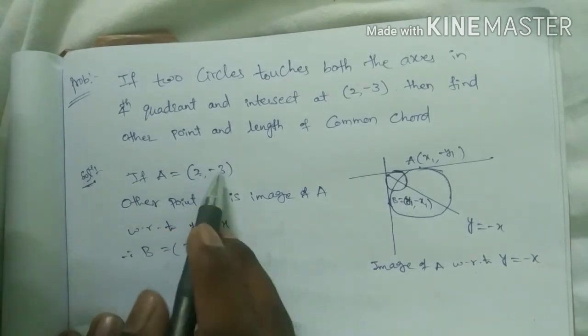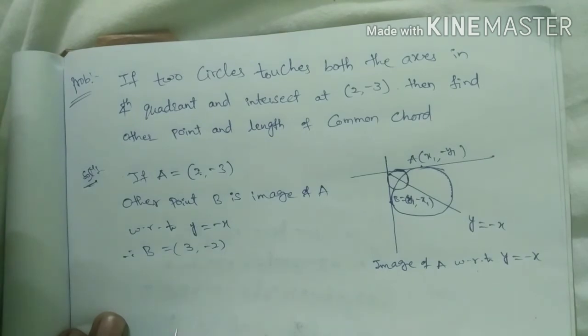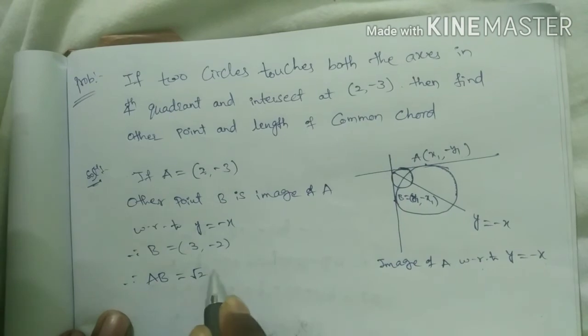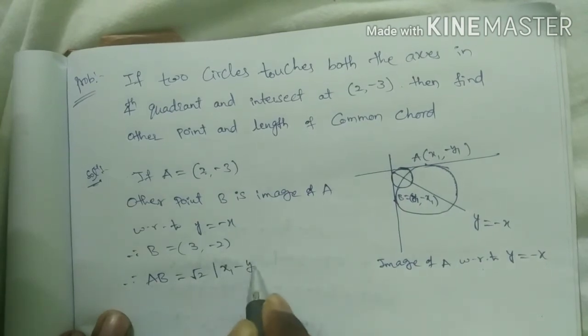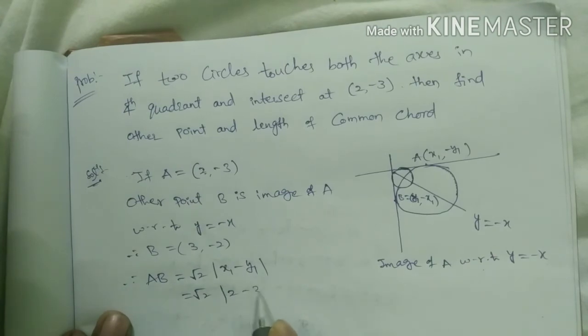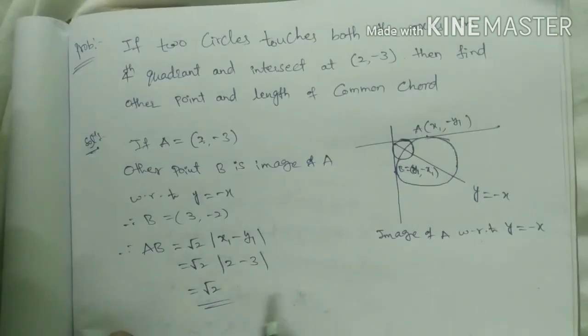Image here, -3 becomes +3 here, 2 equal to -2. Therefore AB = √2|x1 - y1|. Using that formula, |2 - (-3)| = √2.